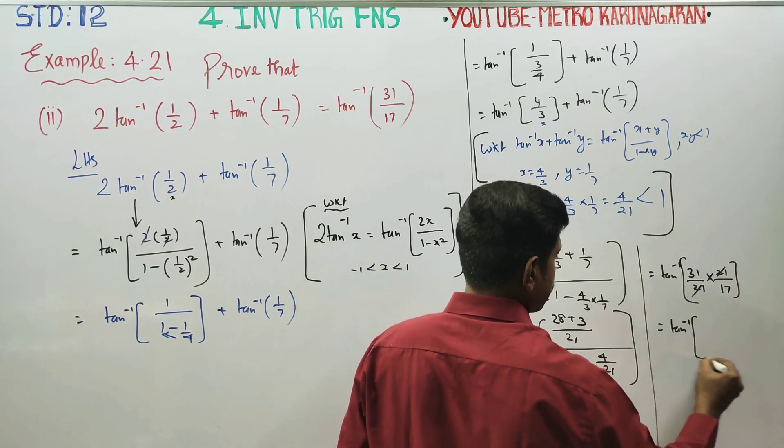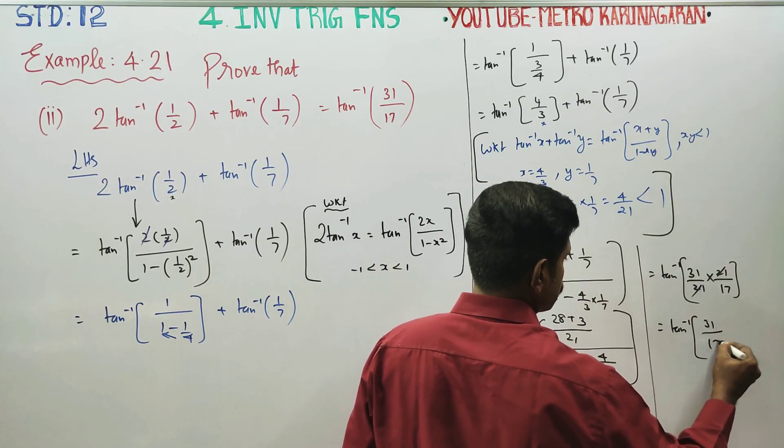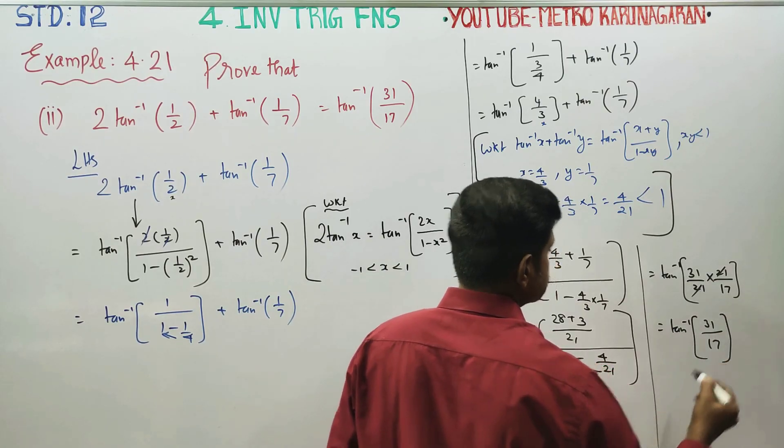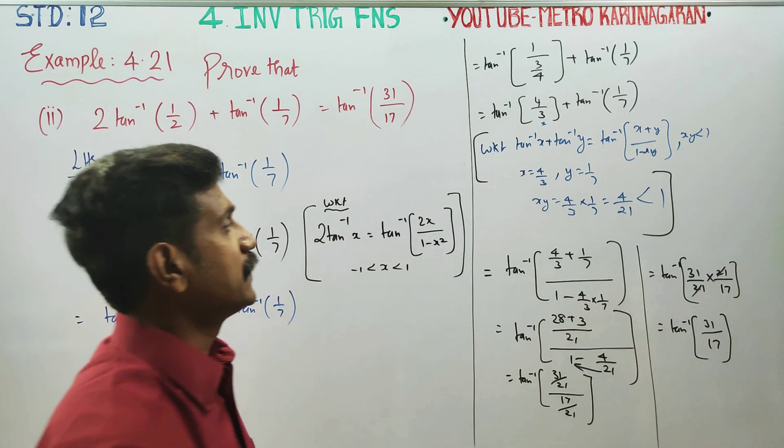Therefore your final answer is tan⁻¹(31/17), which is what we had to prove.